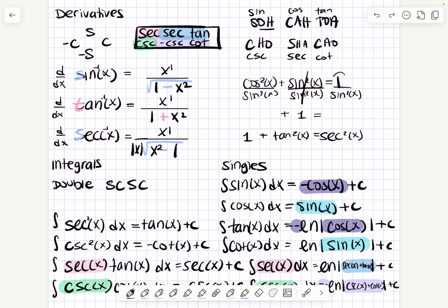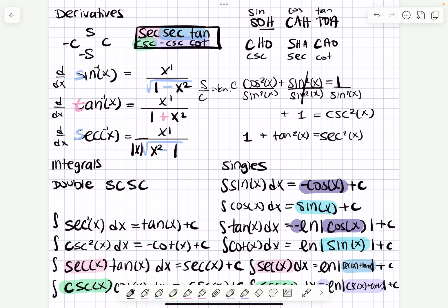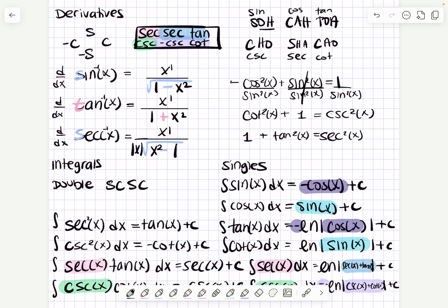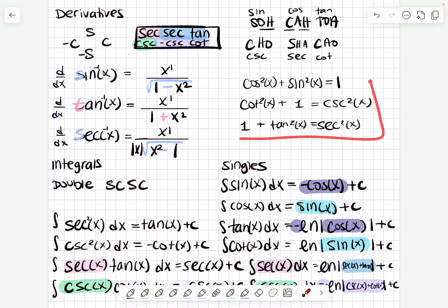Then divide by sine squared of x — this one becomes 1, and 1 over sine squared is cosecant squared of x. For cosine over sine: cosine is adjacent over hypotenuse, sine is opposite over hypotenuse — simplify, you get adjacent over opposite, which is cotangent. So cot²(x) + 1 = csc²(x). Those are your three Pythagorean identities.